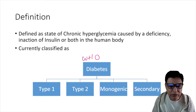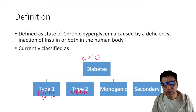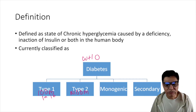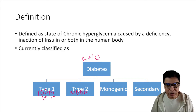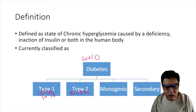Type 1 diabetes was formerly called insulin-dependent diabetes mellitus, while Type 2 was known as non-insulin-dependent diabetes mellitus. They also used subtypes 1A and 1B, which are no longer used. Now it's simply called Type 1 diabetes mellitus, caused by relative deficiency of insulin or complete absence of insulin.